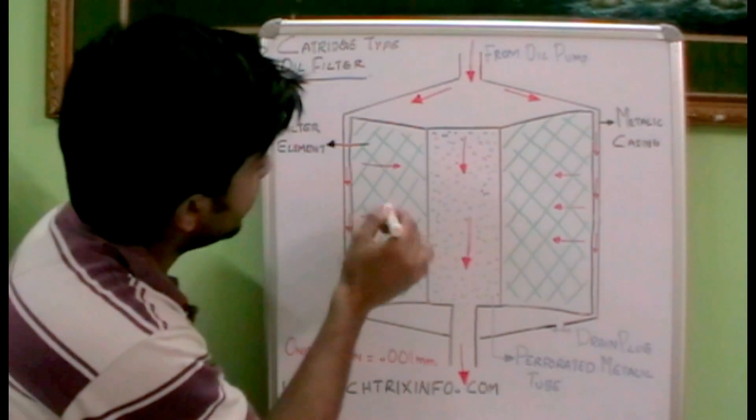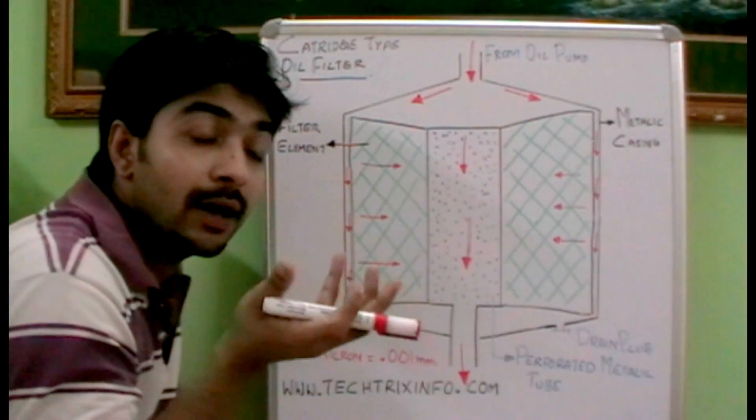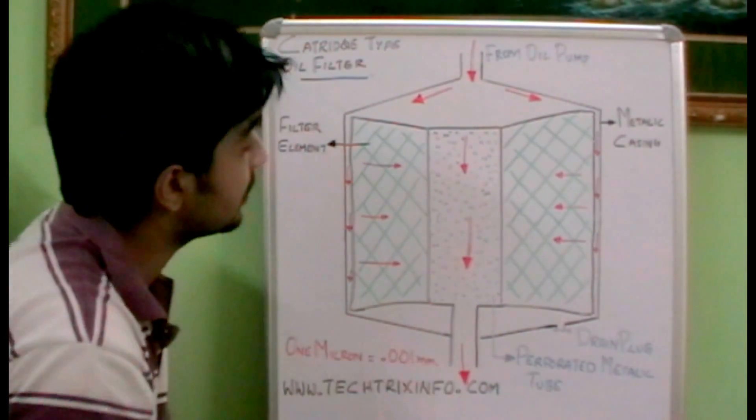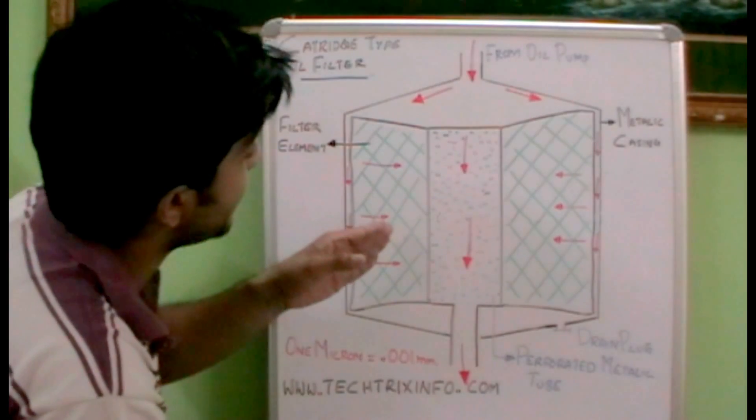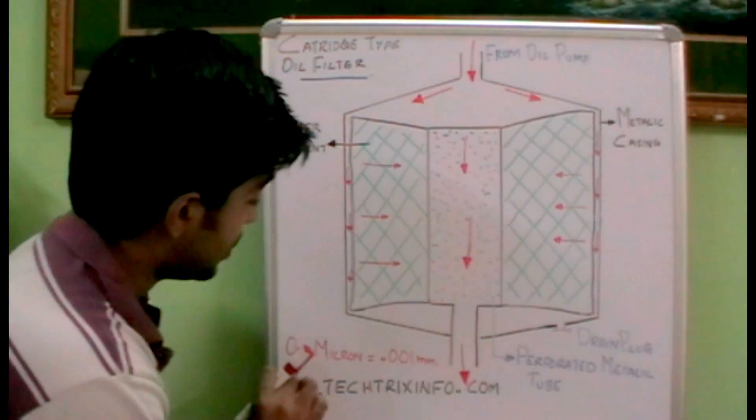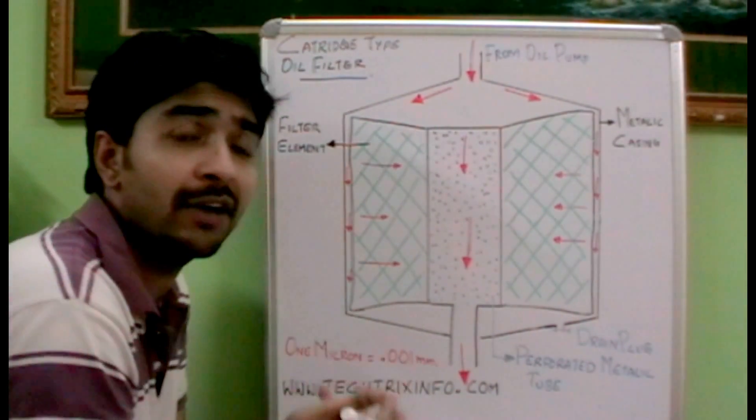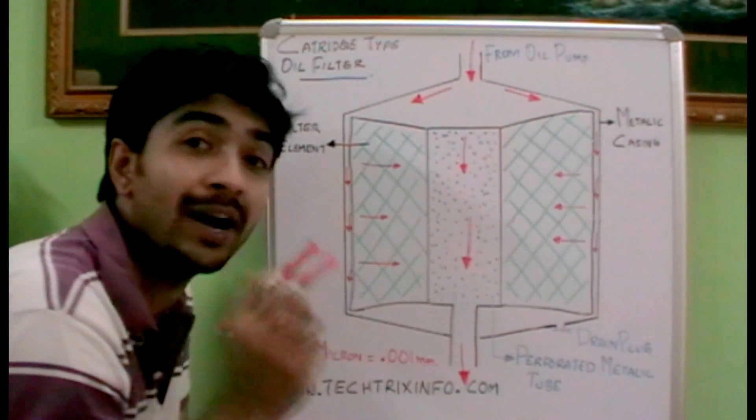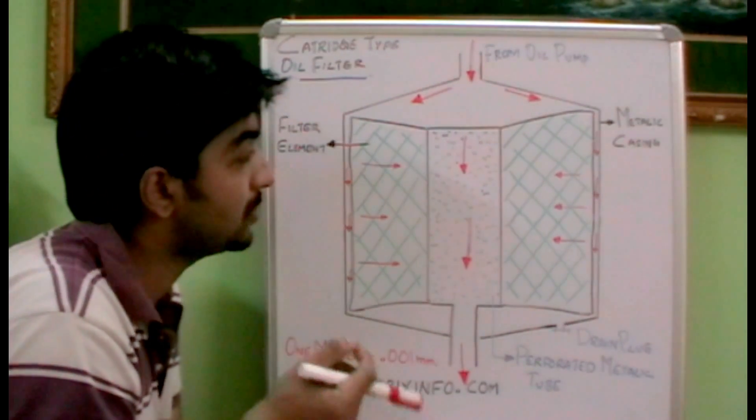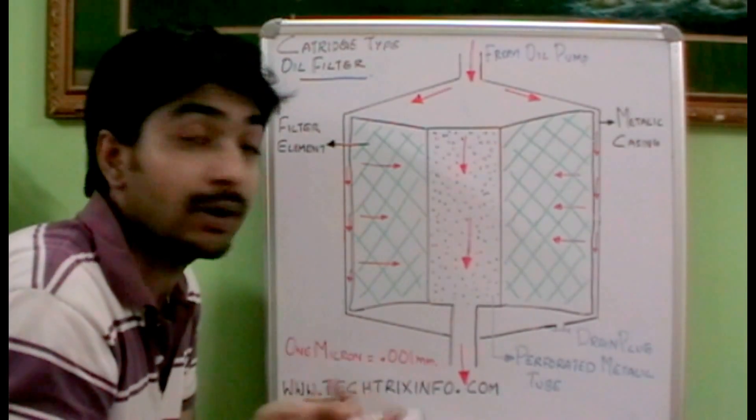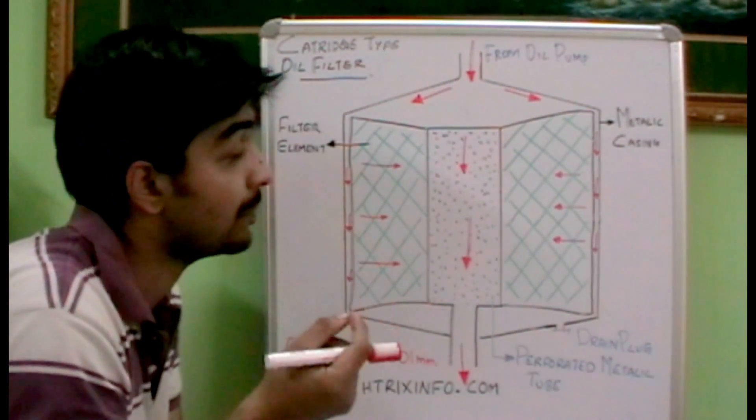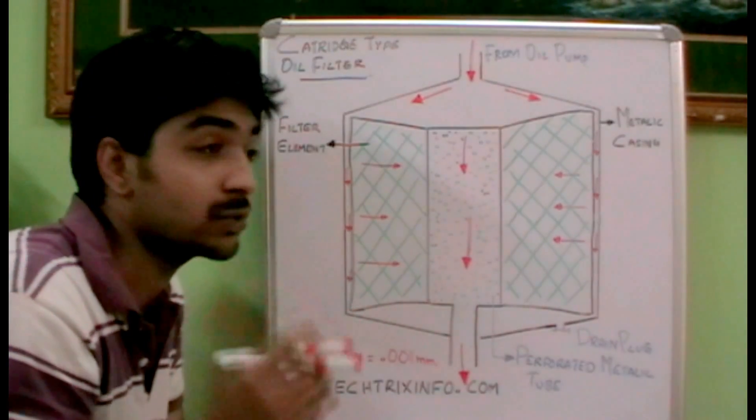While it is passing through this filtering element, the lubricating oil or the fluid gets filtered. How it gets filtered is that this has a very low micron rating. That means if it is in a grade of like 5 micron or so. One micron is 0.001 mm. To make it more meaningful to you, I can say our hair thickness or diameter is coming about 100 micron.